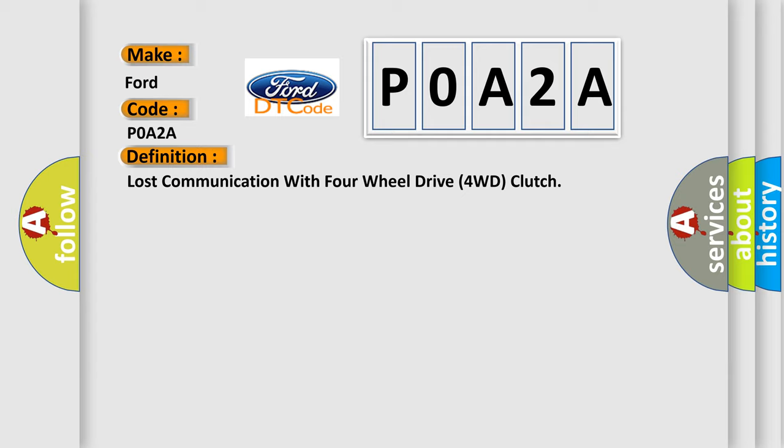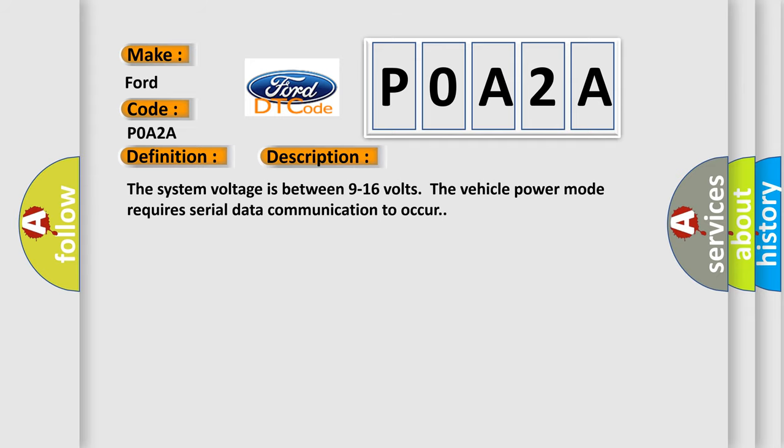And now this is a short description of this DTC code. The system voltage is between 9 to 16 volts. The vehicle power mode requires serial data communication to occur.